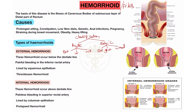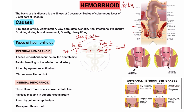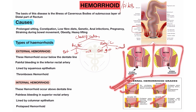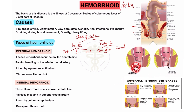Fourth grade of hemorrhoid: there is prolapse with inability to be manually reduced — meaning it cannot be reduced at all. So on the basis of grade: first grade — no prolapse; second grade — prolapse with spontaneous reduction; third grade — prolapse with manual reduction; fourth grade — prolapse with inability to manually reduce. External hemorrhoid is below the dentate line; internal hemorrhoid is above the dentate line.